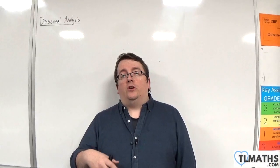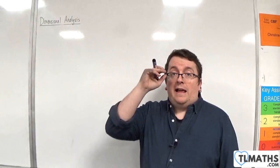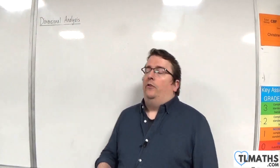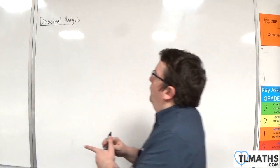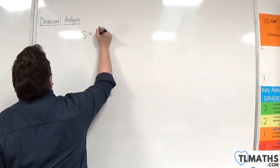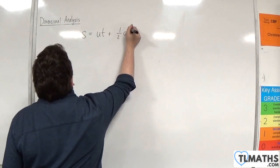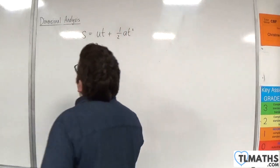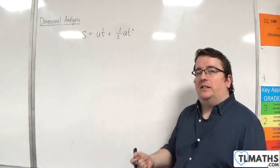At the start of this section, I mentioned that we would look at dimensional consistency. So let's look at the constant acceleration formula: S is equal to ut plus one half at squared. Let's check that this is dimensionally consistent.